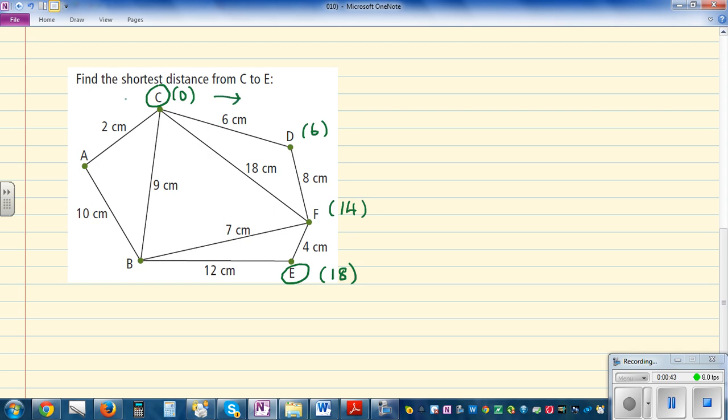Let's go this way. So 0 plus 2 is 2. 2 plus 8 is 10. And 10 plus 12 is 22. We're not going to write 22 because 22 is greater than 18.